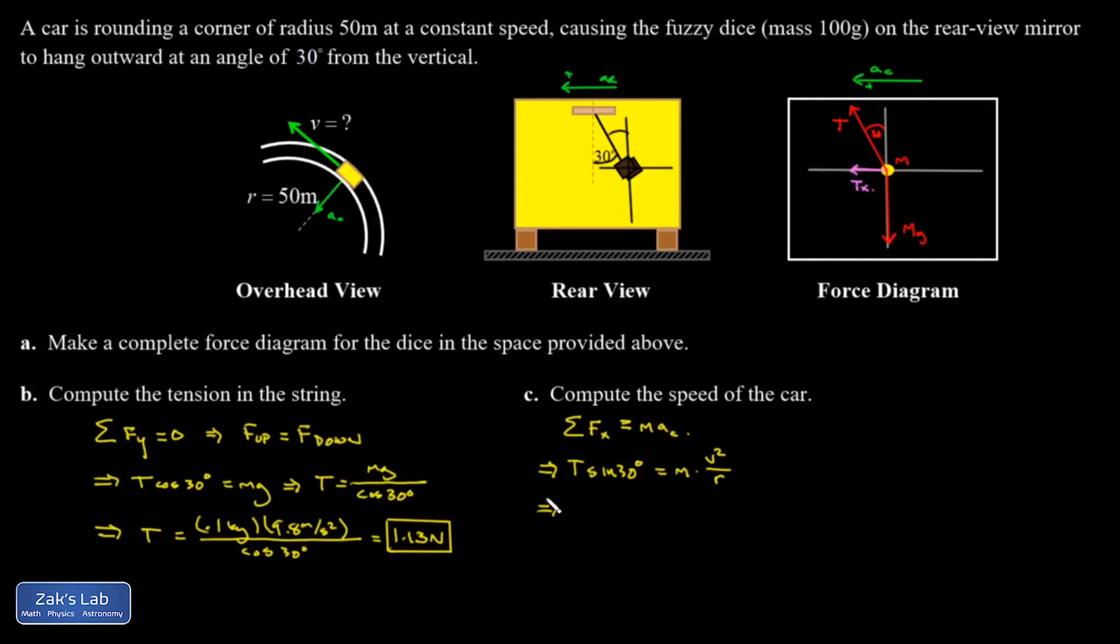And I'm going to go ahead and plug in what the tension is. We figured it out symbolically back here based on what was required to hold up the fuzzy dice against gravity. So I can plug in mg over cosine 30 times sine 30 equals mv squared over r.